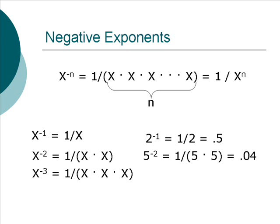Particular examples, 2 to the power of minus 1 is equal to 1 half is equal to 0.5. And 5 to the power of minus 2 is equal to 1 over 5 squared, which is equal to 0.04.